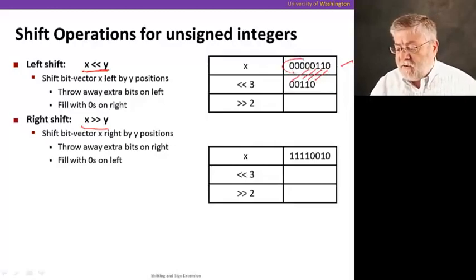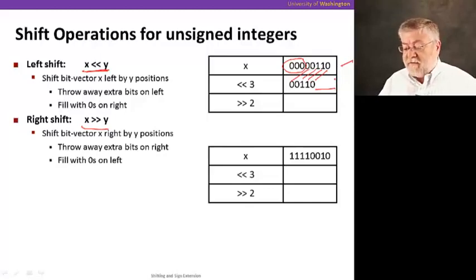You'll notice that the high order three bits, the most significant bits, we're going to kind of lose. They're just going to drop off the end. And we're going to have a hole left over on the right of three bits that we need to fill. And we're just going to fill that with zeros.